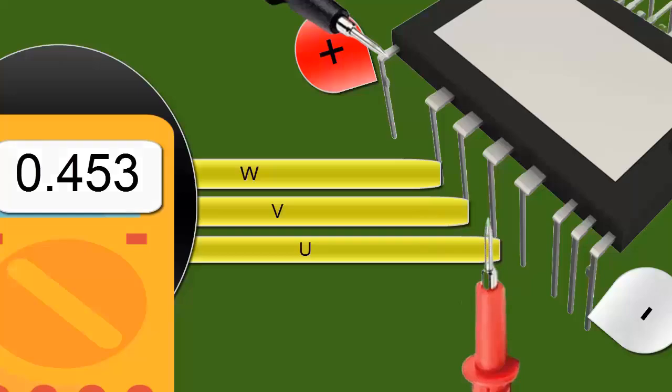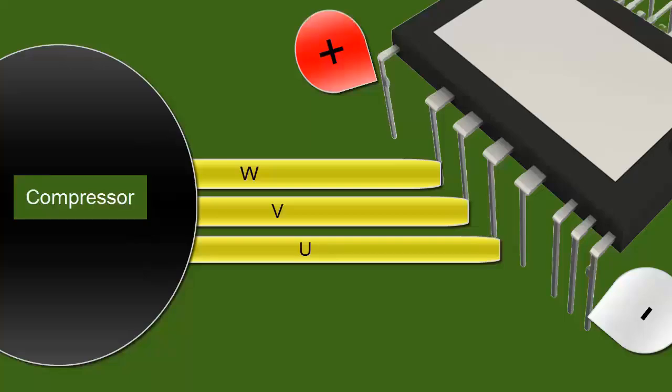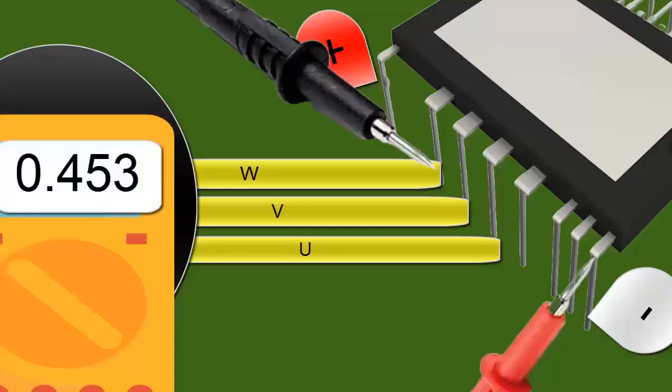Let's proceed with the integrity test of the last three diodes. Place the red probe of the multimeter on the negative input of the IPM electronic circuit.